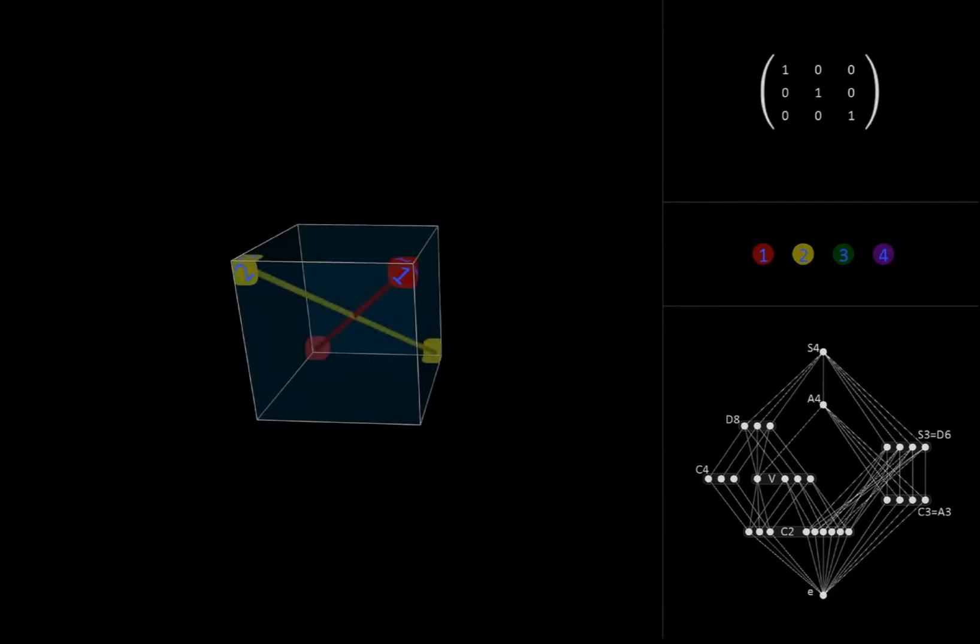As it turns out, the 4 long diagonals of the cube will give us just what we're looking for. Let's say the identity element in the cube's symmetry group corresponds to the arrangement shown, where the numbers on the front face appear in counterclockwise order starting from 1 at the top right corner.